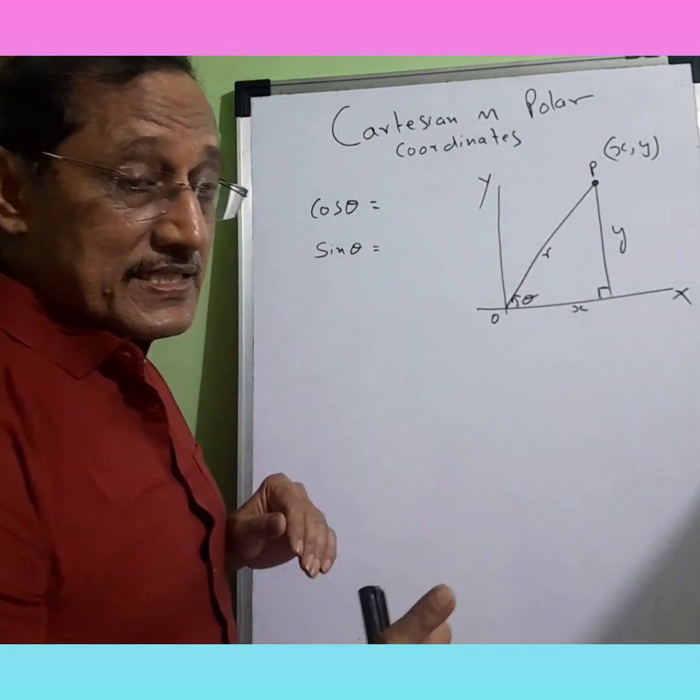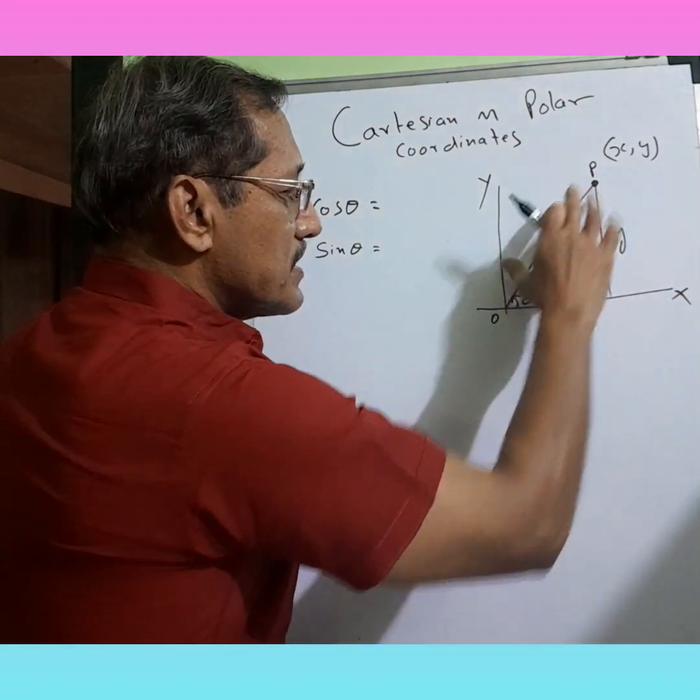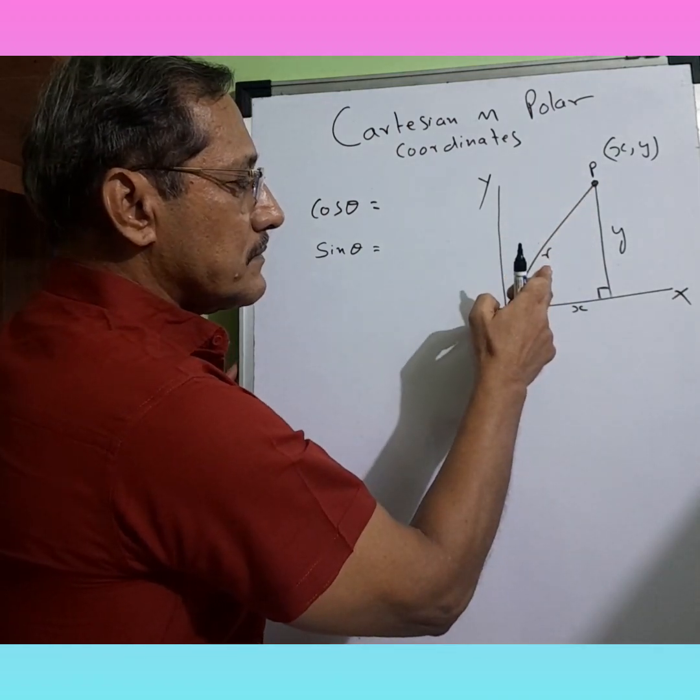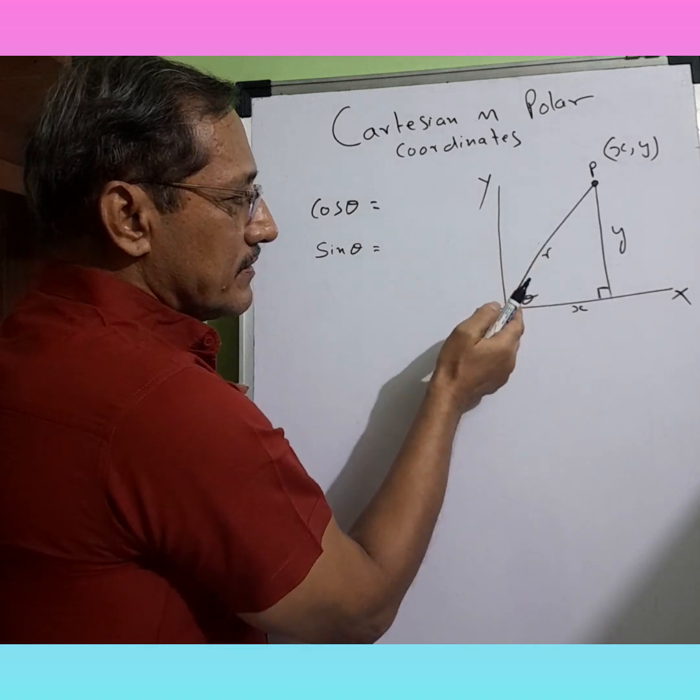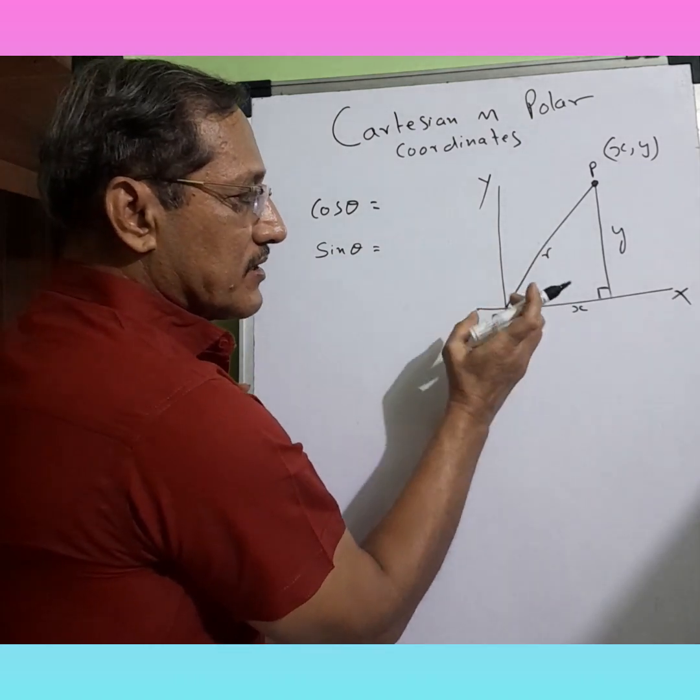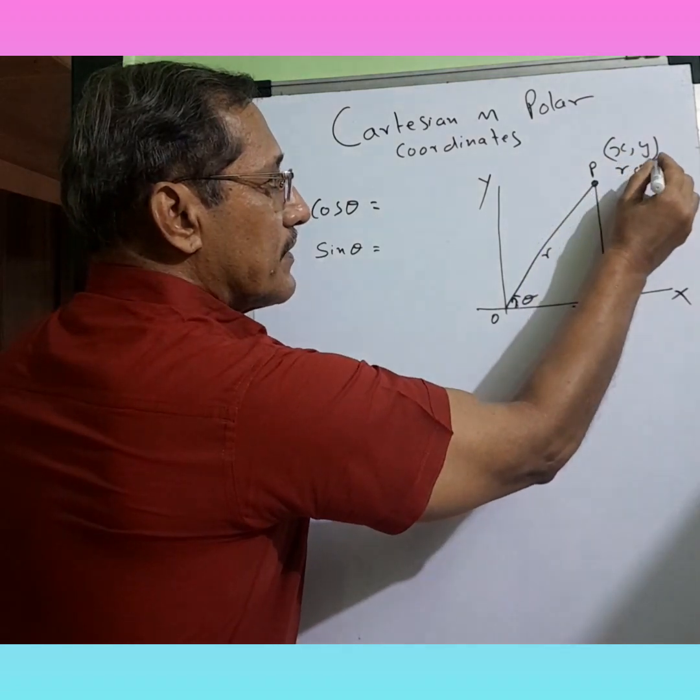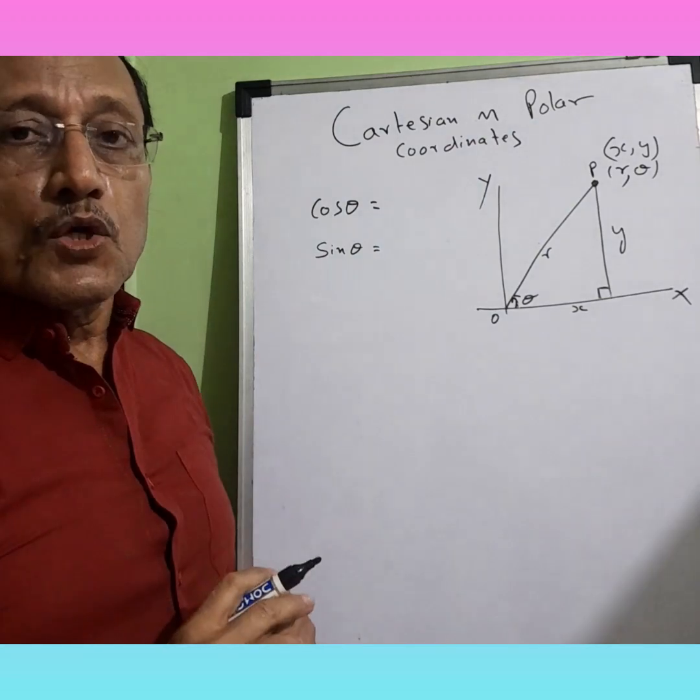We can also talk in terms of this distance from origin, which is R, and at what angle is it from X axis. So it could also be R theta, and this is what is polar coordinate.